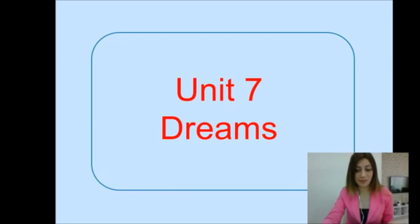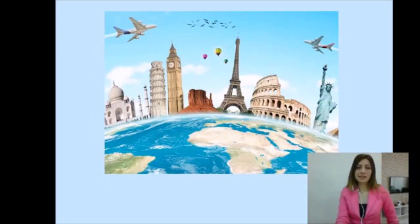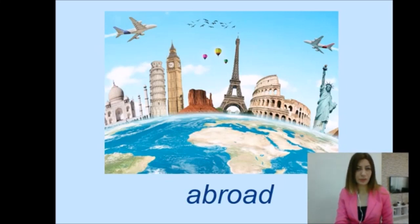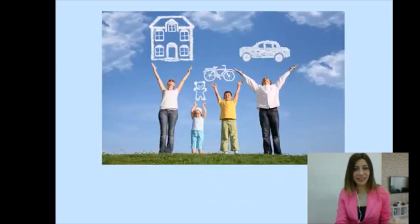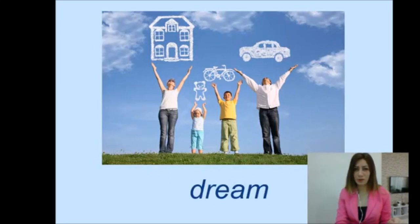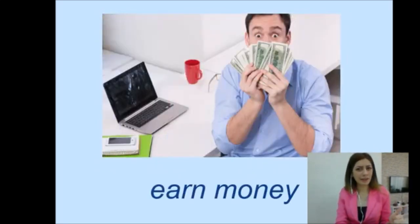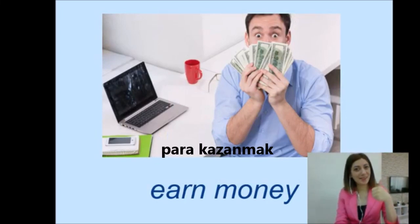Unit 7, Dreams. Let's start with the words. What is this? A road. What is a road in Turkish? Great! Well done! What is this? Dream. What is dream in Turkish? Yes! Perfect! What is earn money in Turkish? Earn money. Great! Well done!